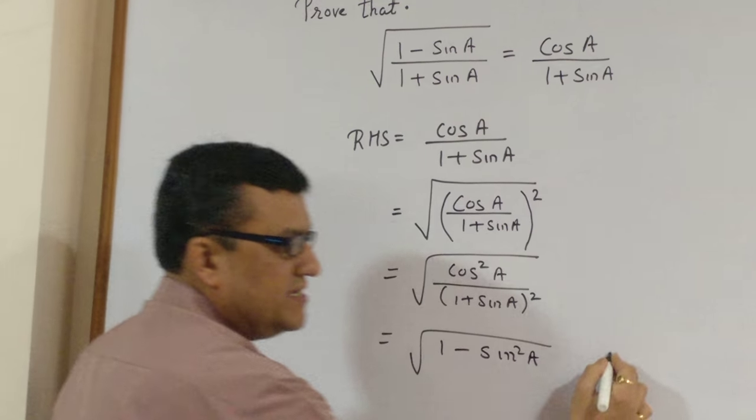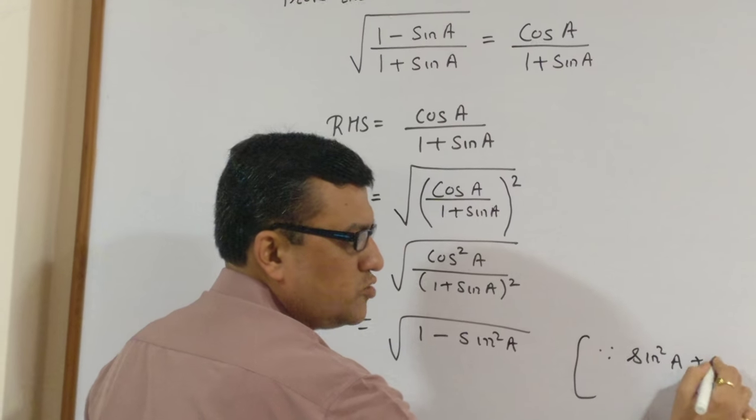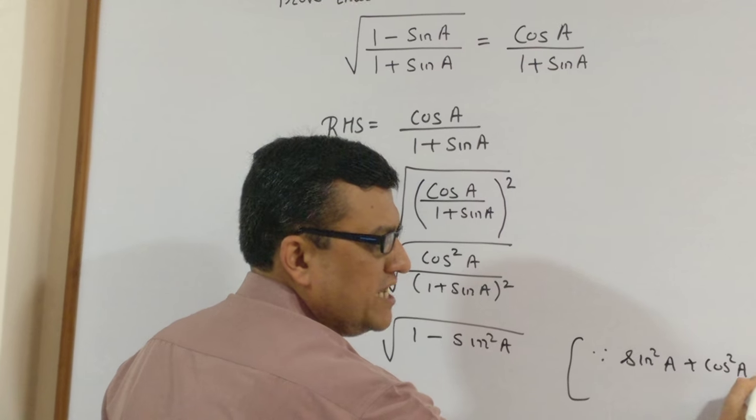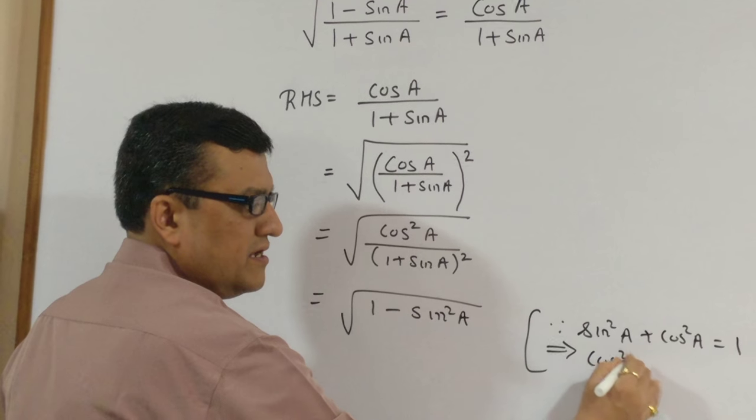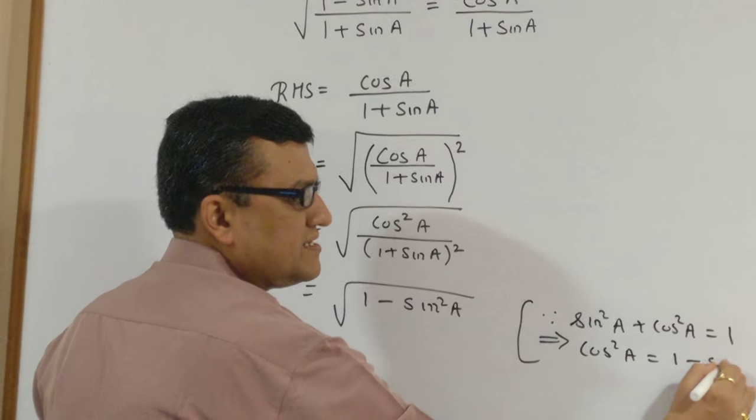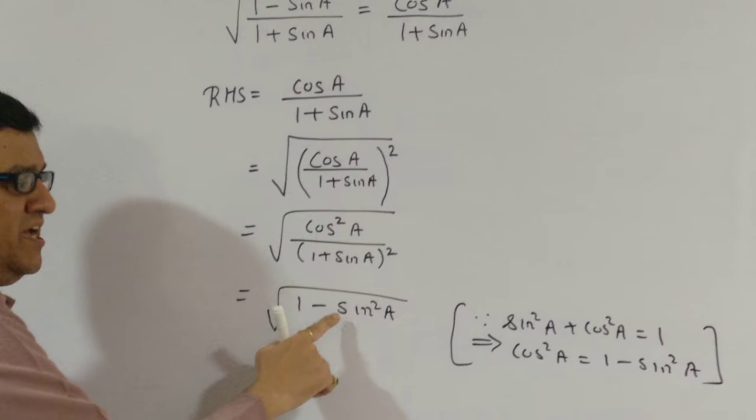We all know one property: since sine square A plus cos square A is equal to 1, which implies cos square A is equal to 1 minus sine square A. So instead of cos square A we have taken 1 minus sine square A.